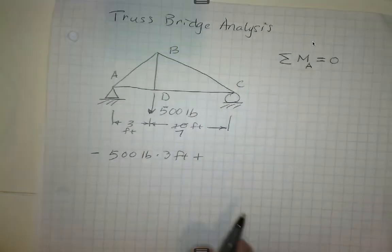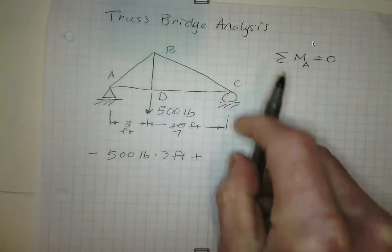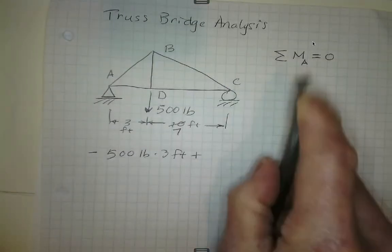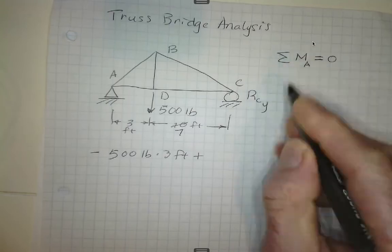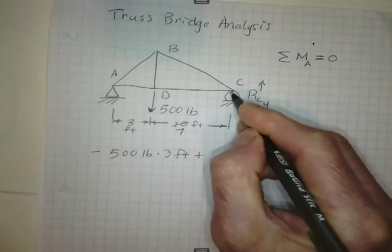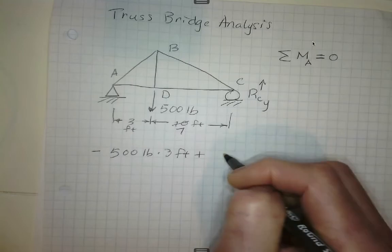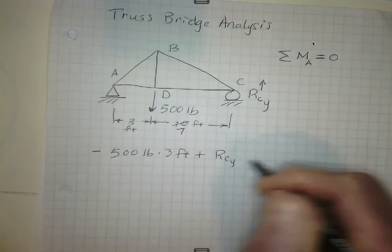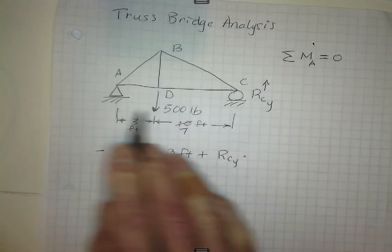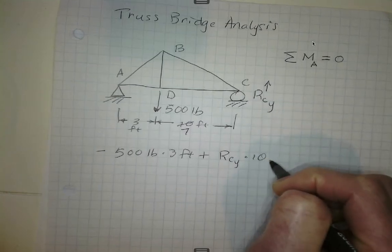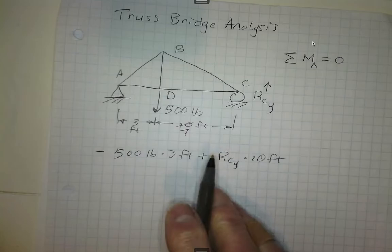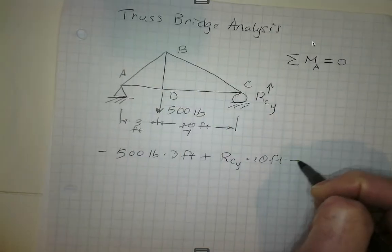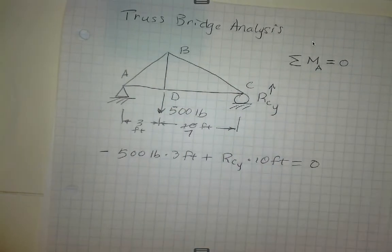That's added to a counterclockwise rotation caused by the reactionary force at point C in the y direction. Again, there's a force pushing up right there, and that force times the 10 feet distance to point A, force times distance. Again, it's positive because it's counterclockwise, and those two forces should add up to zero.